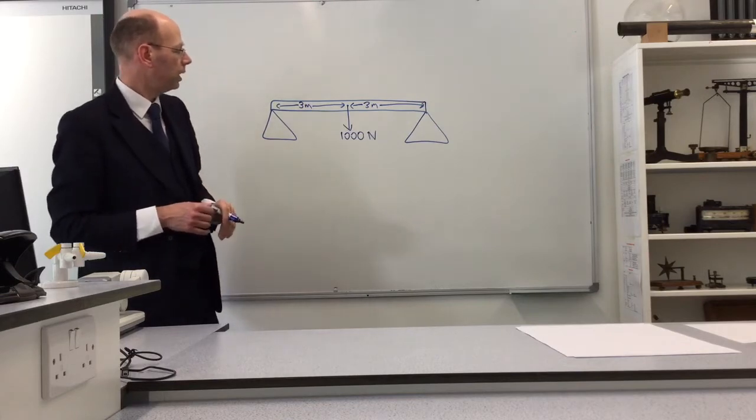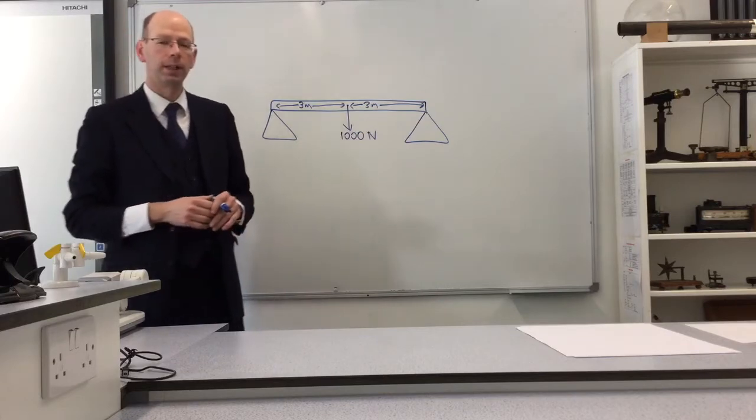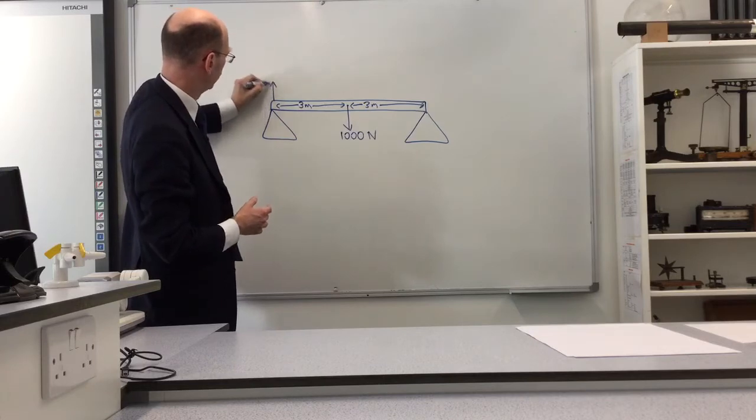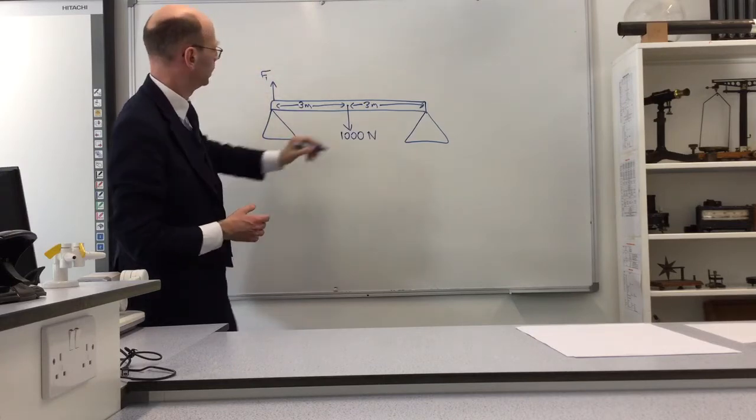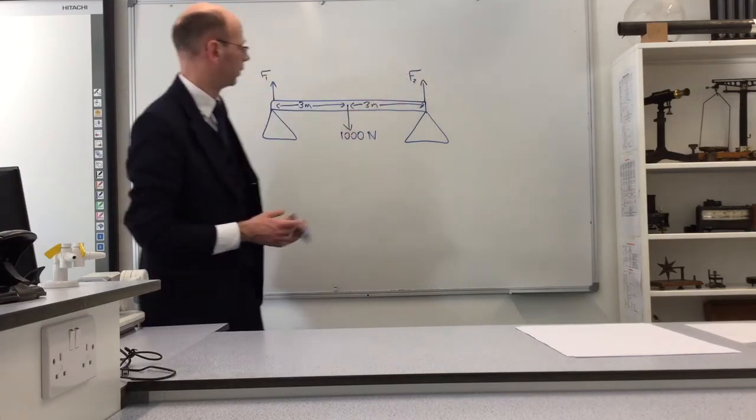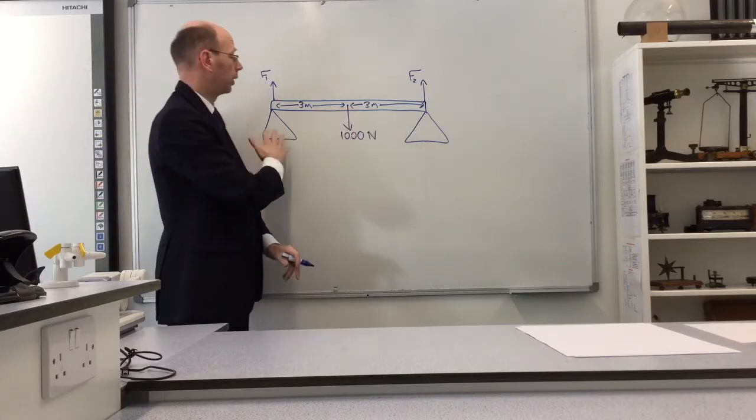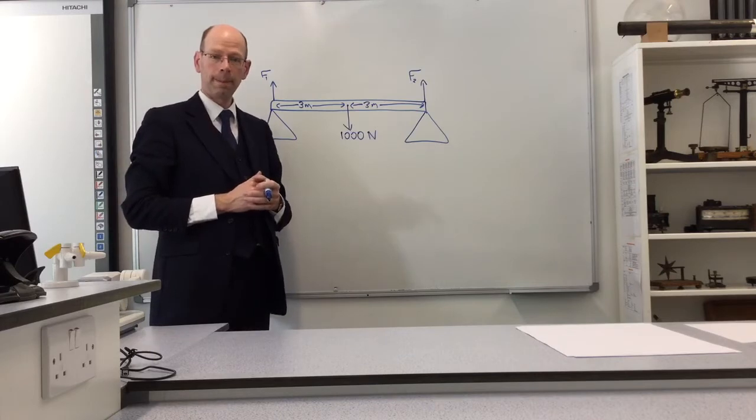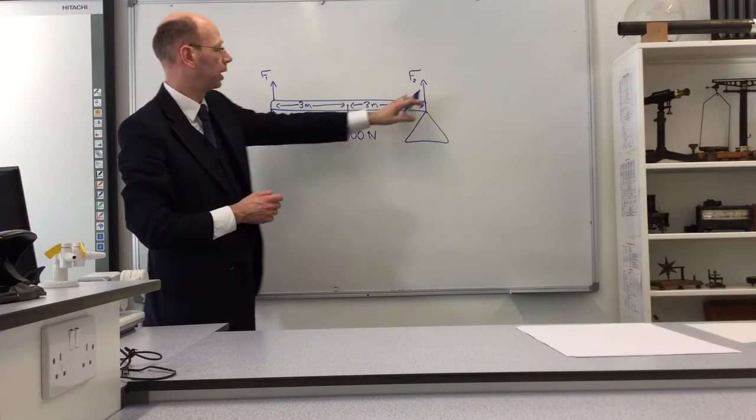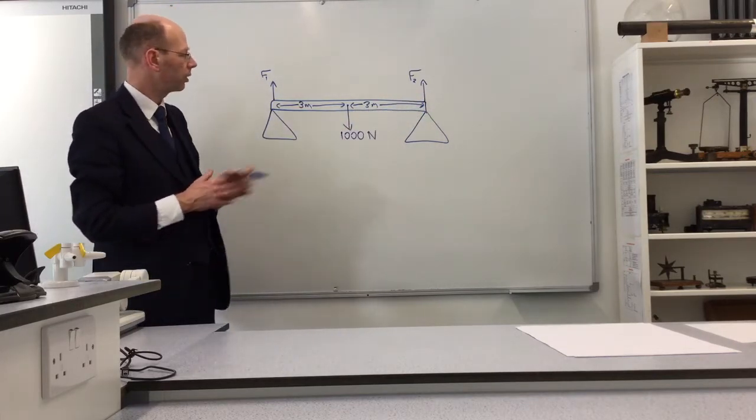What do we know about the forces that each of these supports is providing? It's in equilibrium, it's balanced. So this force here, which we're going to call F1, and this force here, which we can call F2, the two supporting forces from the supports on either side. Because it's in equilibrium, we know that those two forces must add up to 1000. And it's pretty symmetrical, so it's reasonable to say that F1 and F2 will both be the same, they'll both be 500 newtons. So that's nice and easy.